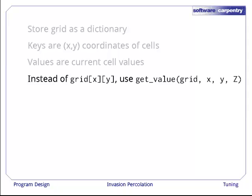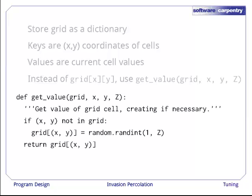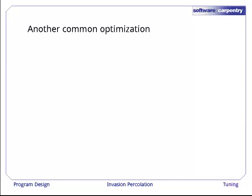Instead of looking things up directly as grid subscript x subscript y, we use a function getvalue that takes grid, x, y, and the random range as arguments. To understand why we need the random range, take a look at the implementation of that function. If the coordinate x, y is not in the grid, i.e. if it's not already a key in the dictionary called grid, then we create a random value in 1 to z and store that with the key x, y. We then return the value that we just created. Of course, if the coordinates x, y are already a key in the grid, then we'll skip the if and just return the value that's there.